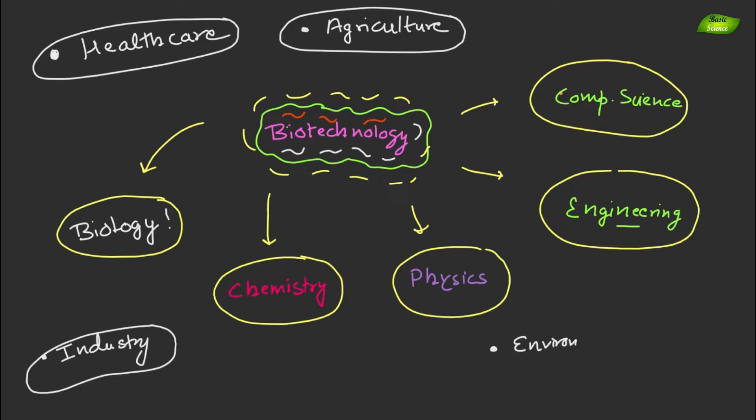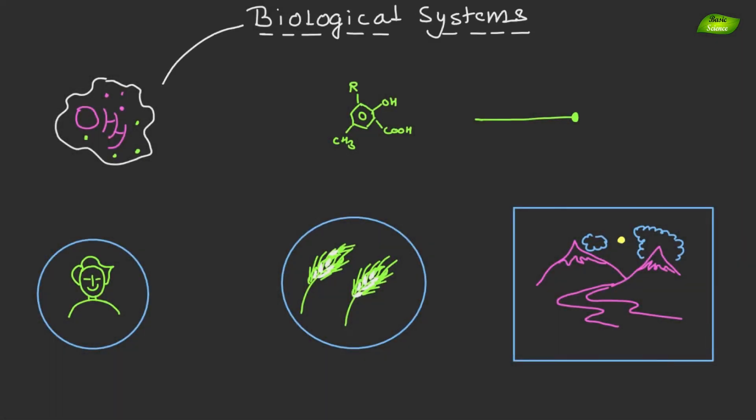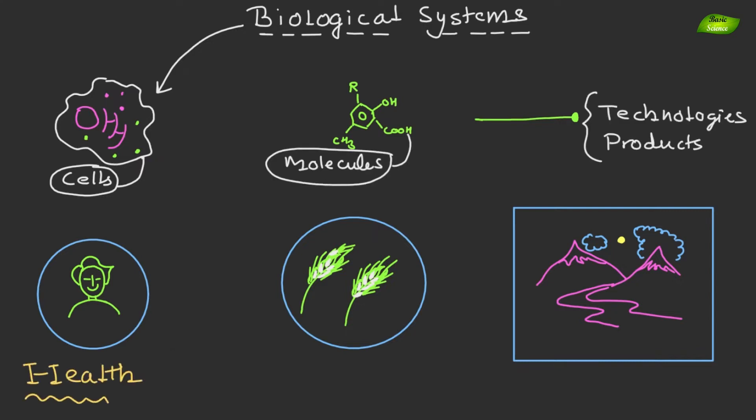agriculture, industry and environmental sustainability. Biotechnology utilizes biological systems, for example cells and molecules, to develop technologies and products that improve human health, enhance food production and facilitate environmental conservation.